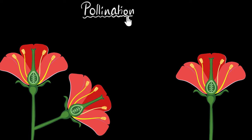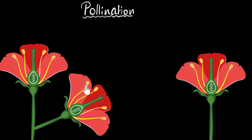Let's start with what pollination is. Pollination is simply the act of transferring the pollen grains from the anther — the top part of the male organs — to the stigma. Stigma is the top part of the female organ. So let me just show that.